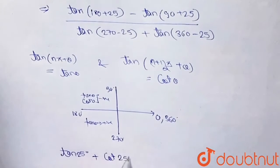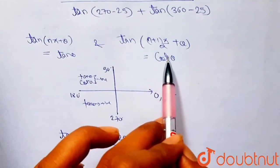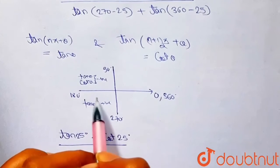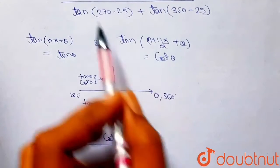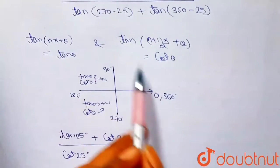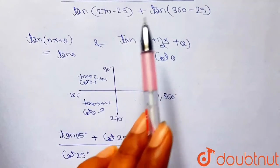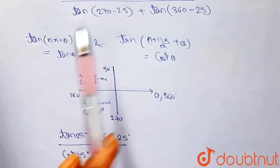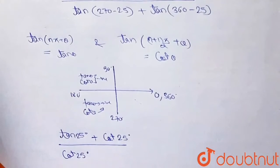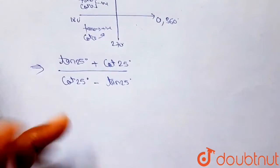So we have cot(25°) in the numerator. Divided by: tan(270° - 25°) becomes cot(25°) — in the third quadrant cot(θ) is positive — so that's positive cot(25°). And tan(360° - 25°) is in the fourth quadrant where tan(θ) is negative, so tan(360° - 25°) = -tan(25°). So the denominator is cot(25°) minus tan(25°).